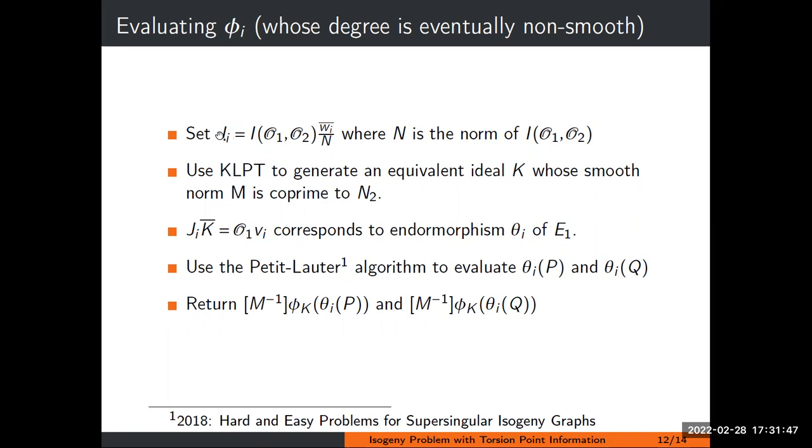So Ji is the left ideal corresponding to these φi. The main idea is to use KLPT to compute an equivalent ideal K between O1 and O2. In the isogeny setting, you have an isogeny φi that might not have smooth norm going from E1 to E2. Then from E2 to E1, you compute the smooth degree isogeny using KLPT. If you compose the two, you get an endomorphism of the first curve, which you can evaluate using Petit-Lauter. Then you just have to cut off the part of the smooth one, and you'll get the evaluation of φi. This is what we do here on the slide.